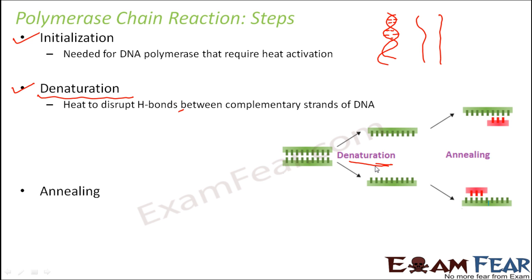In denaturation, the DNA is heated to a temperature of around 98 degrees Celsius for around 30 seconds. This heating causes melting of the DNA, as a result of which the strands separate. This is also termed DNA melting, because when exposed to such a high temperature of around 98 degrees Celsius, the DNA melts, the hydrogen bonds break, and the two strands separate.